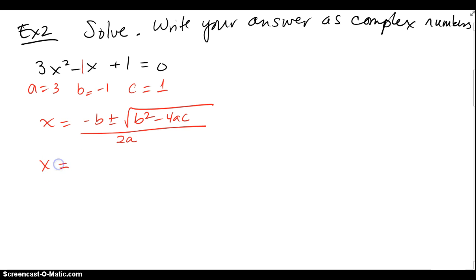So let's go plug in our values. We have a negative b, b is negative 1, plus or minus square root of b is negative 1, square it minus 4a.